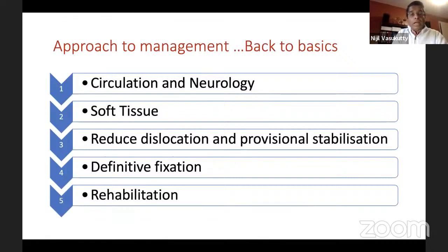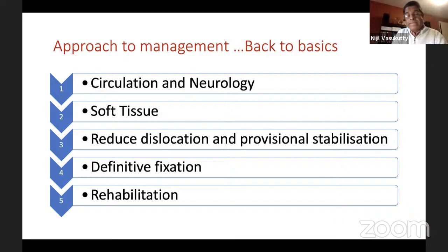You have to follow a basic approach for any limb trauma: first assess circulation and neurology, then assess your soft tissue. The next priority is to reduce a dislocation and stabilize it — stabilizing can be done with a plaster or metalwork. Then you go on to definitive fixation and decide how to rehabilitate your patient. Following this basic algorithm is very crucial for these complex foot injuries.